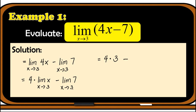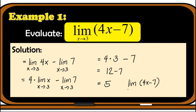So we now have 4 times 3 minus the limit of 7 as x approaches 3. We apply the limit of a constant — the limit of 7 is the constant itself, which is 7. Applying multiplication first, 4 times 3 is 12 minus 7, the answer is 5. So we can conclude that the limit of 4x minus 7 as x approaches 3 is equal to 5.